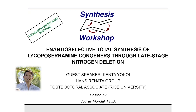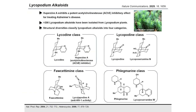Thank you for your kind introduction and invitation for sharing our work on the total synthesis of lycopoceramine congeners. Since the discovery of huperzine A as a potent acetylcholinesterase inhibitor, alkaloids from the Lycopodium plants have gained much interest as biological and synthetic research subjects. To date, more than 200 Lycopodium alkaloids have been isolated, and broadly speaking they can be divided into four major structural classes.